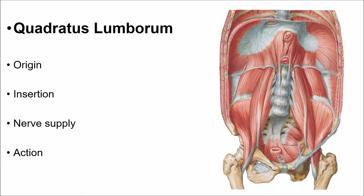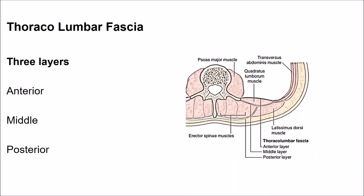This muscle is supplied by T12 and upper 3 to 4 lumbar spinal nerves. The quadratus lumborum fixes the last rib and helps the diaphragm during inspiration. Acting on one side, this muscle acts as a lateral flexor of the trunk. Acting on both sides, it produces extension of the vertebral column.